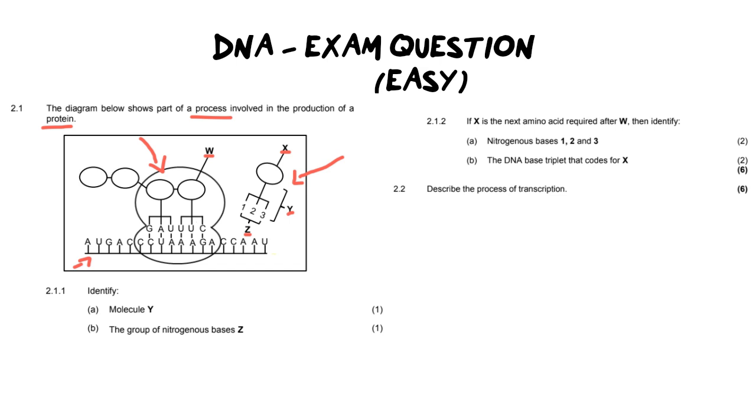Now as we go into the questions we've done all this hard work of labeling the diagram identifying everything making sure we know what everything is and now the easy part is just simply allocating those answers to the questions. And as you can see in the first one it says molecule Y well we know molecule Y is a tRNA. Then it says the group of nitrogenous bases at Z what do we call that group the anticodon we've already labeled that.